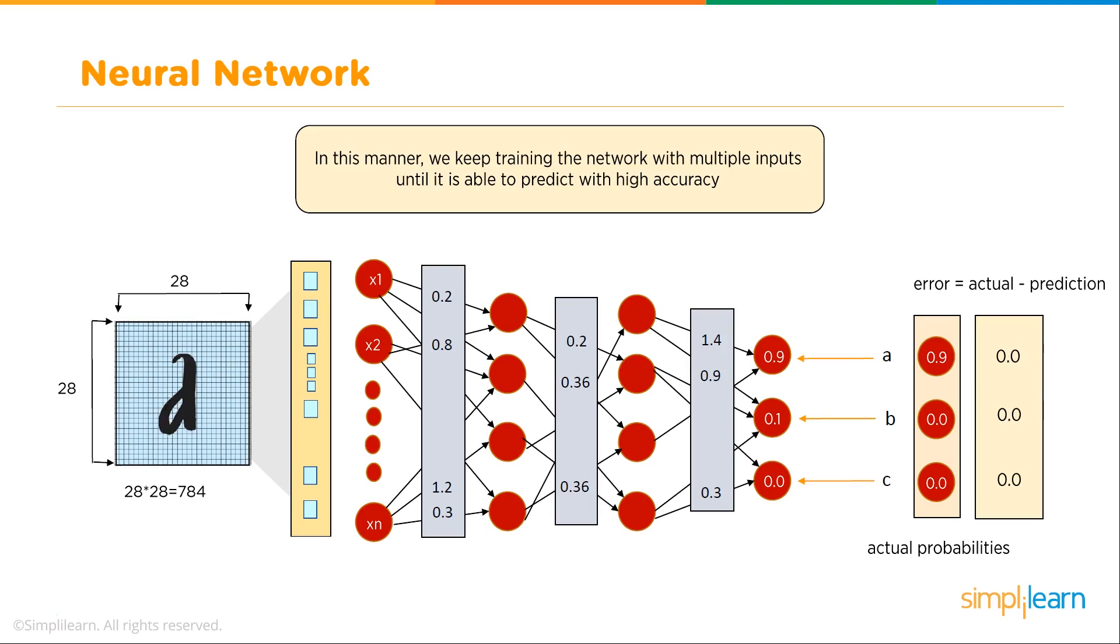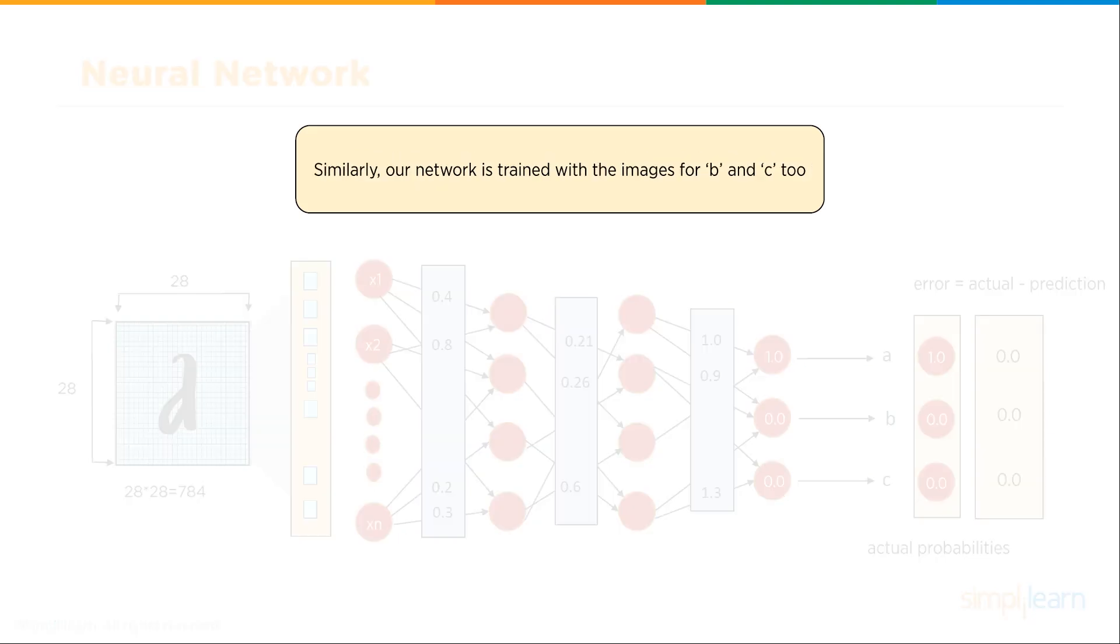You can see here we have a different A. It quickly switches from cursive A to maybe a more elongated A. Similarly, our network is trained with the images for B and C too.